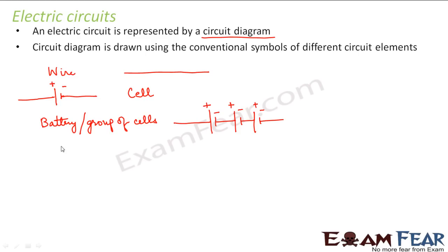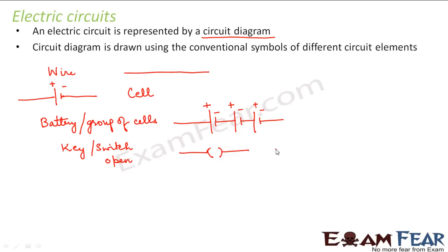How do I represent a switch or a key? It is sometimes known as a key, sometimes known as a switch. When it is represented in an open position, that means the key is open, or the switch is off. Sometimes the key is also represented in a slightly different open form in a circuit, but both representations mean the same thing — no current flows, the switch is off.